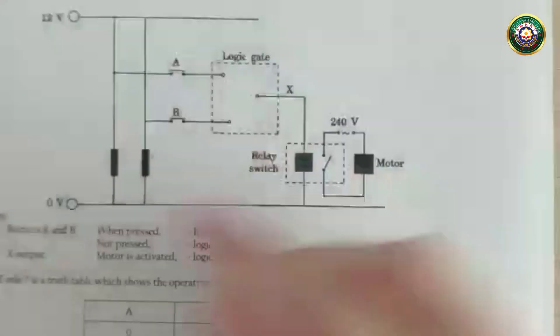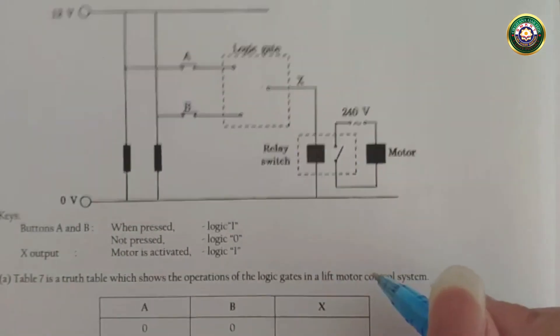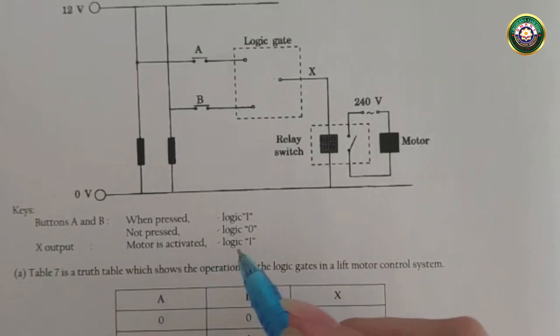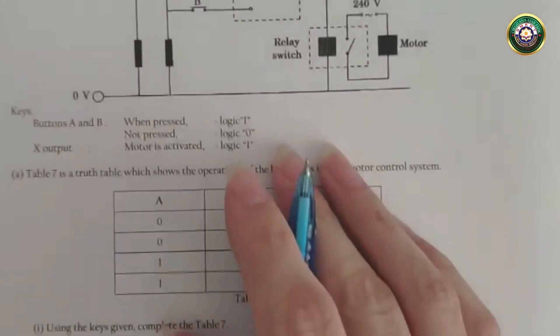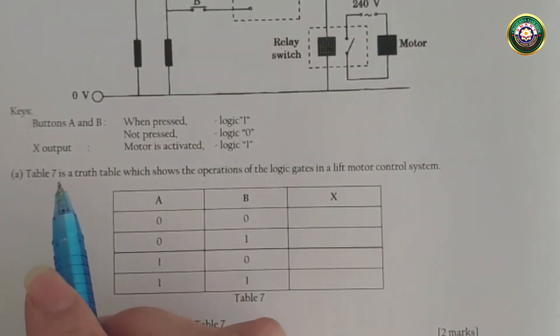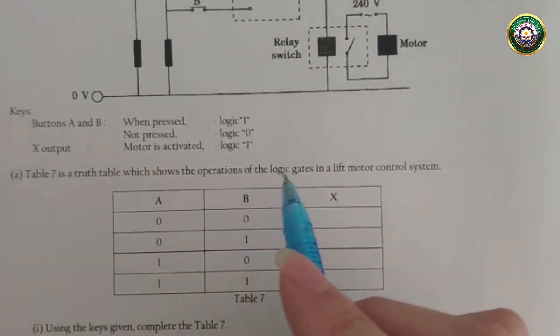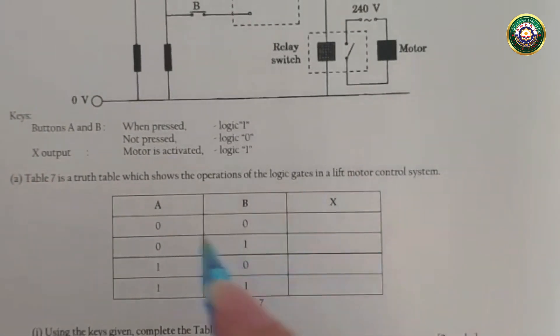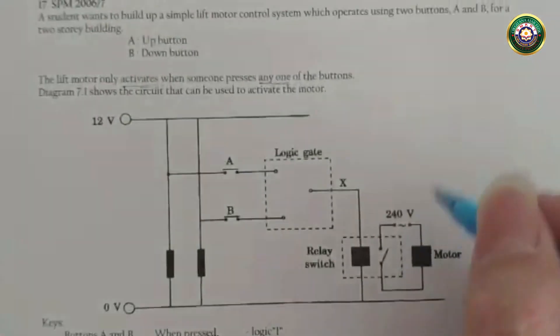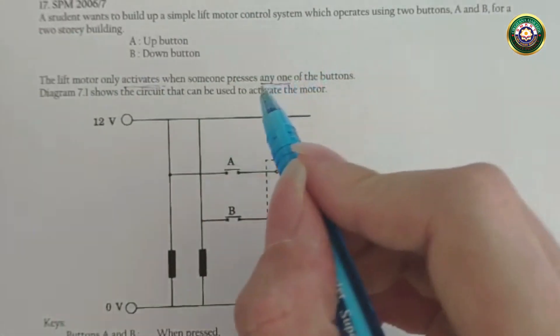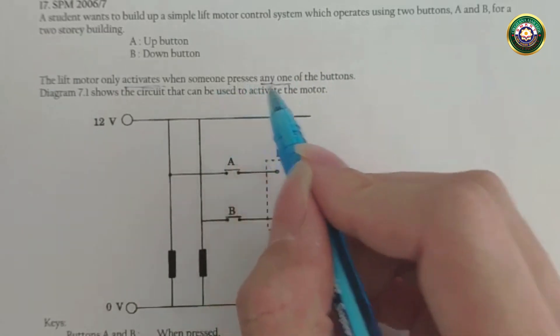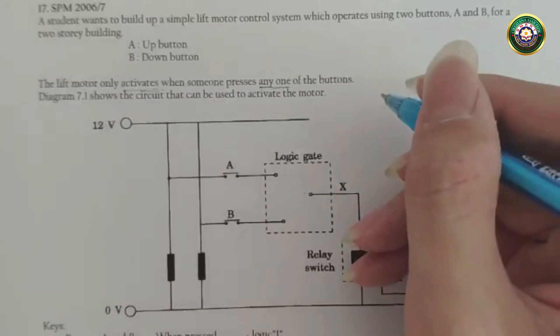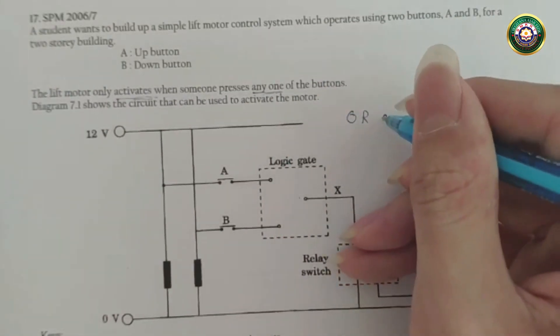Okay so here's the little circuit thing and then it says when pressed logic is 1, not pressed logic is 0 and obviously when motor is activated logic is 1. So then first question. Table 7 is a truth table which shows the operations of the logic gates in a lift motor control system. So from here remember the things I just underlined, it says when someone presses any one of the buttons it activates. So from here you can guess that this could be an OR gate.